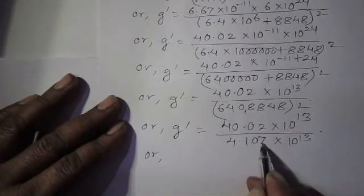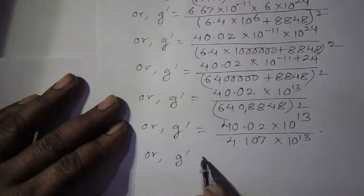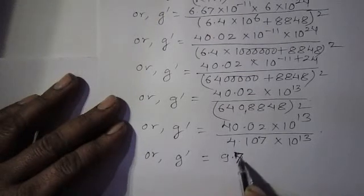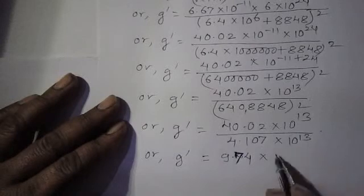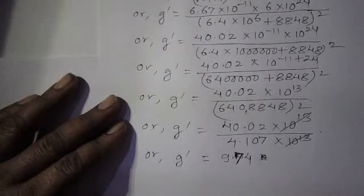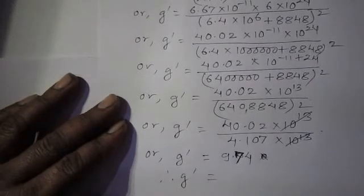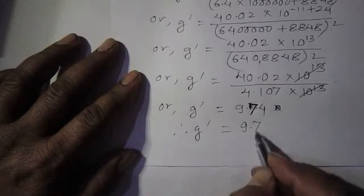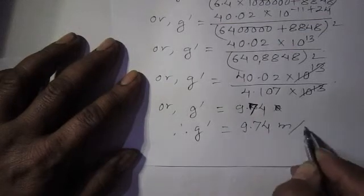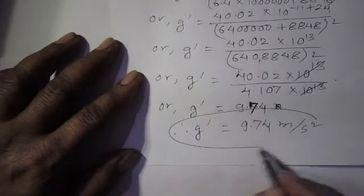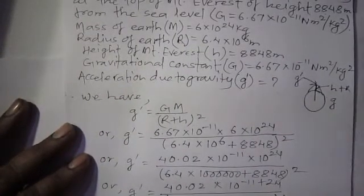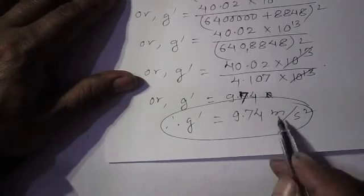40.02 divided by 4.107 gives 9.74. Therefore, g dash equals 9.74 meters per second squared. This is the acceleration due to gravity, with SI unit meter per second squared. So the final answer is: the acceleration due to gravity at the top of Mount Everest is 9.74 meters per second squared.